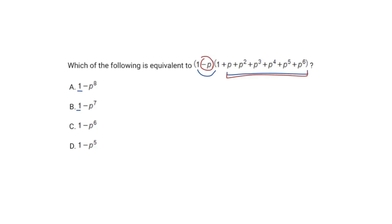So when I distribute it out to the 1, I get a negative p. When I distribute it to the positive p, I get a negative p squared. And so I'm always going to have one value above the positive value. So what I mean by that is when I distribute this out, I'm going to get a negative p, negative p squared. And I get negative p times positive p squared. That's going to give me negative p to the third.